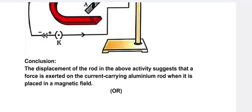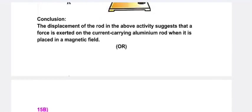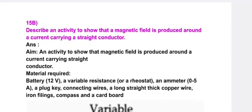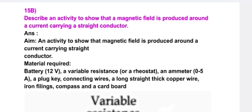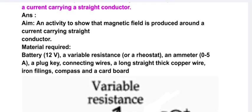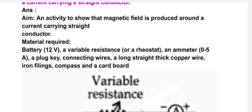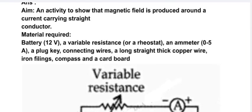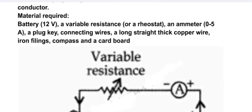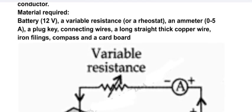Or 15b, describe an activity to show that a magnetic field is produced around a current carrying straight conductor. Answer: an activity to show that magnetic field is produced around a current carrying straight conductor. Material required: battery 12 volts, a variable resistance or a rheostat, an ammeter, battery, plug key, all these are arranged here.